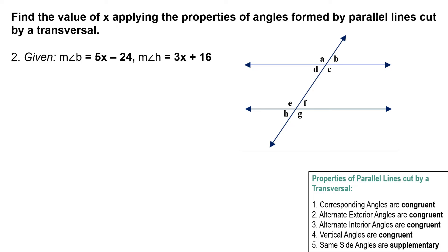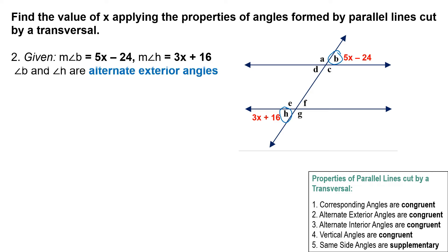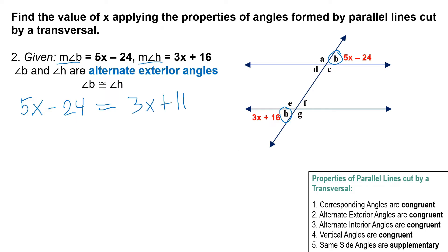Let's try another example. Angle B equals 5x minus 24 and angle H equals 3x plus 16. In the figure, angle B and angle H are alternate exterior angles, which means they are congruent. So we set them equal: 5x minus 24 equals 3x plus 16.